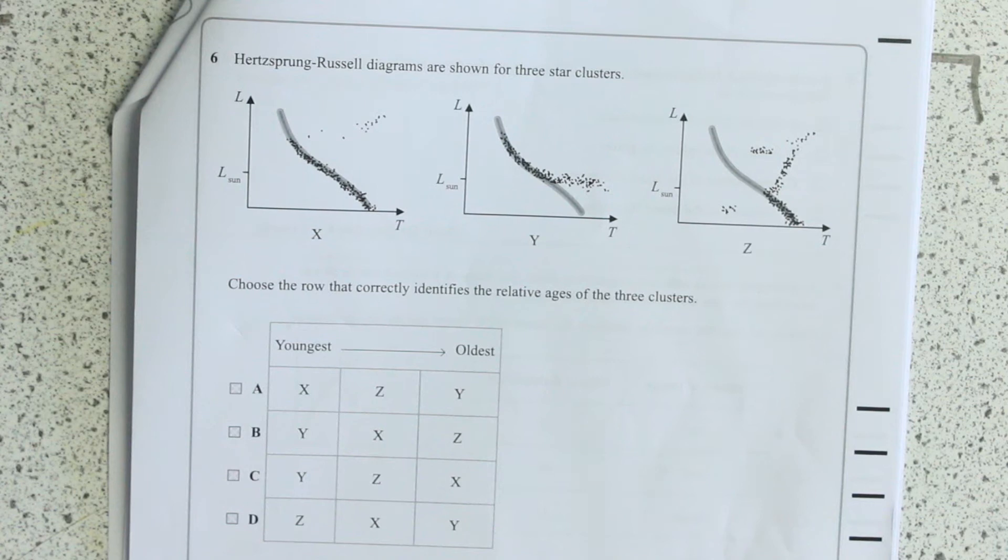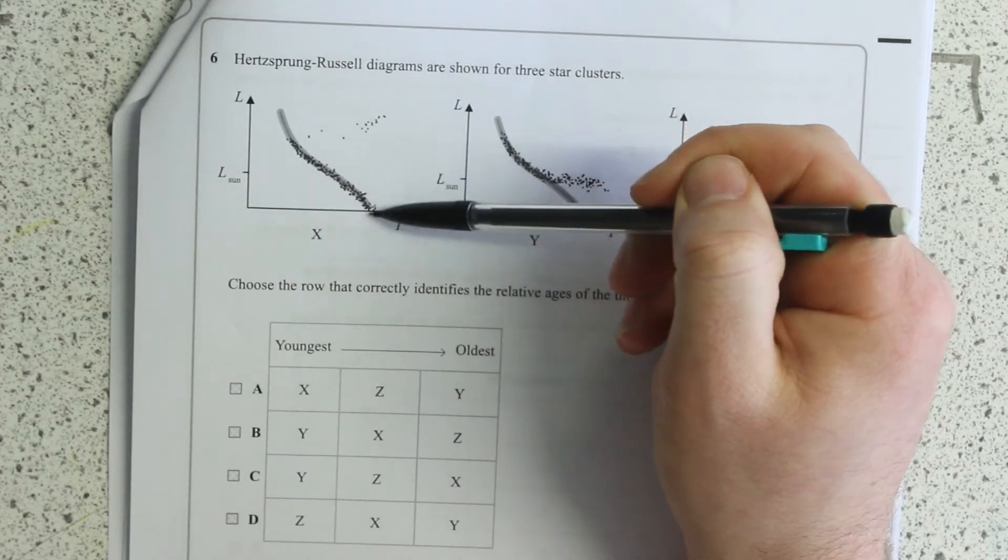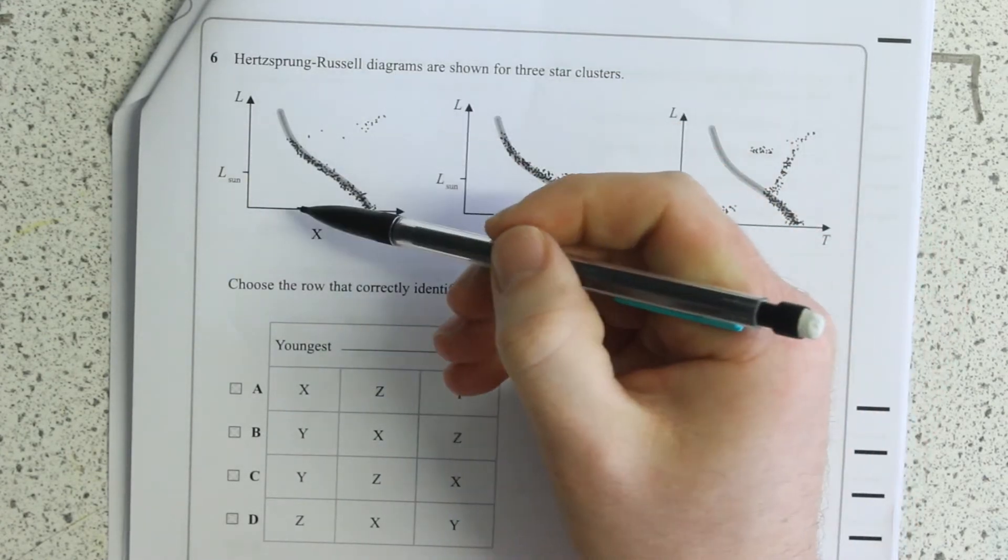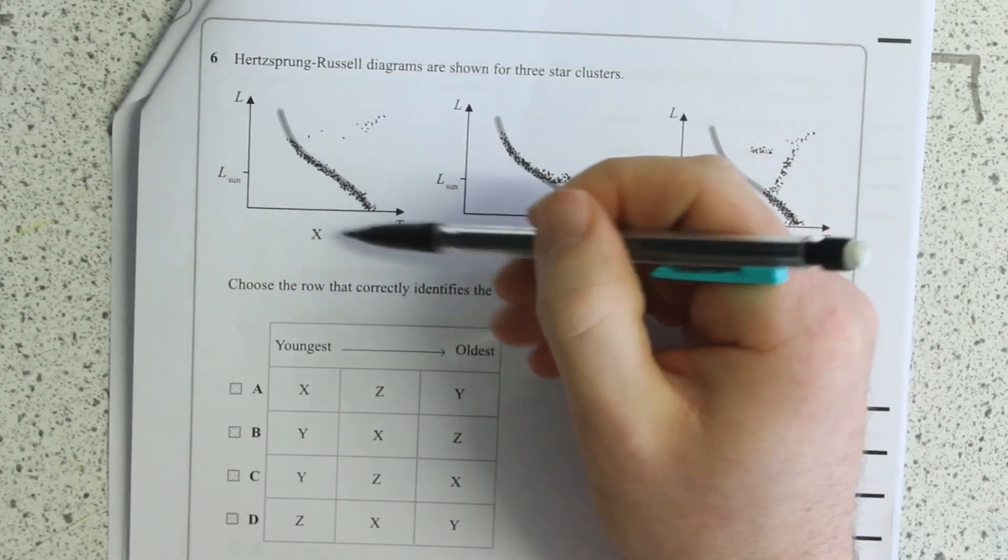I understand you're learning Hertzsprung-Russell diagrams and I don't think this is easy at all, but you've got the idea - this is your main sequence of stars, and hopefully you've got the idea of the more massive end and less massive end.